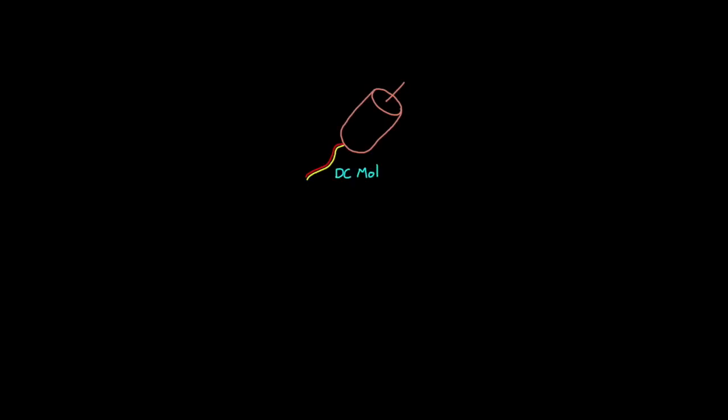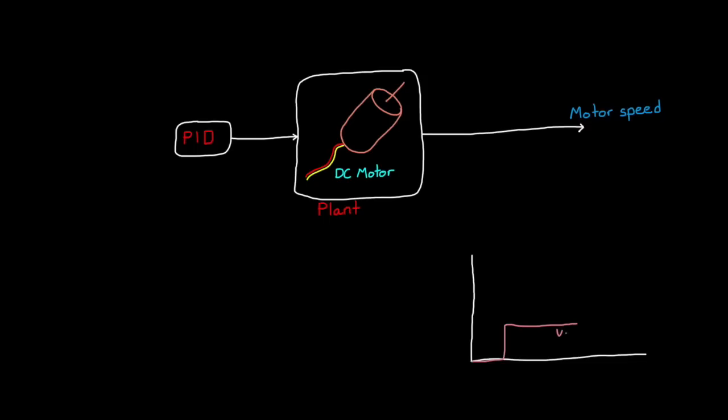Here's the setup. You have a DC motor and you want to develop a PID controller that will control the motor speed. When you apply a voltage to the motor, the motor will accelerate up to some steady-state speed. The higher the voltage, the faster the motor will run.